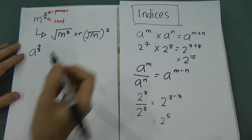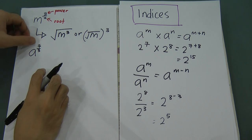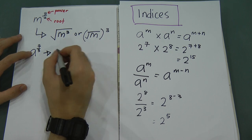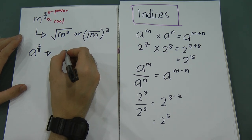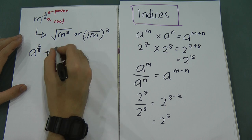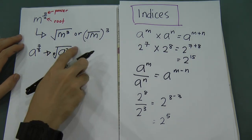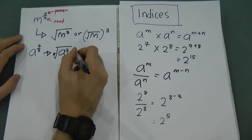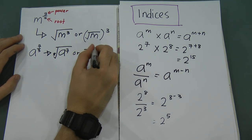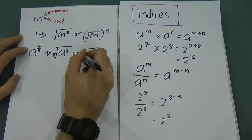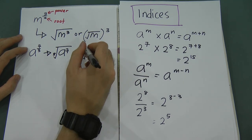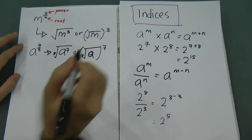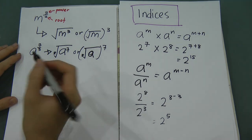One more example: a to the power of 7 over 3. The top is the power and the bottom is the root, so this can be written as a to the power of 7 under a cube root, or as the cube root of a, raised to the power of 7.